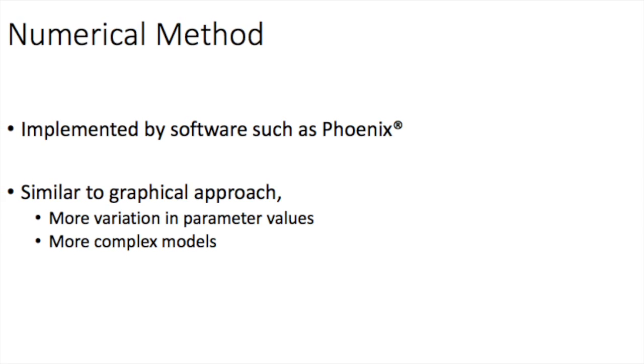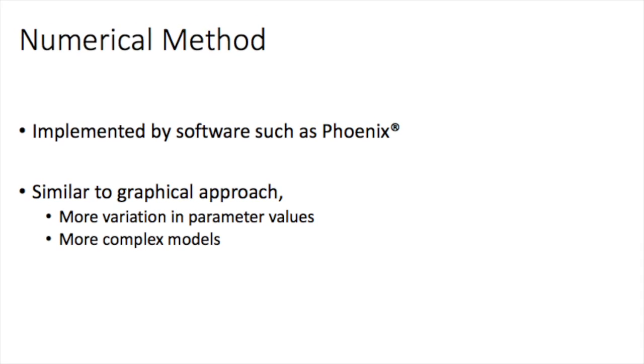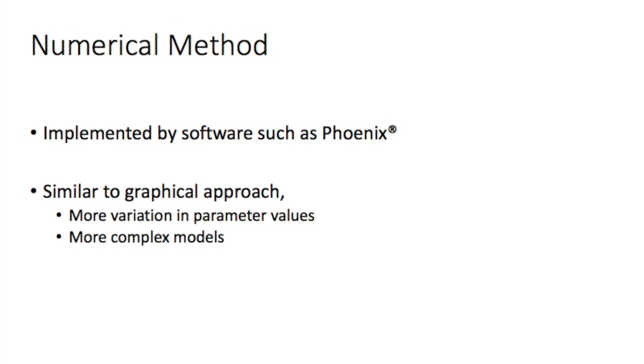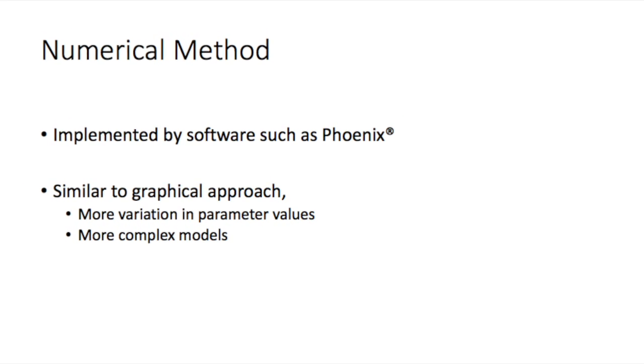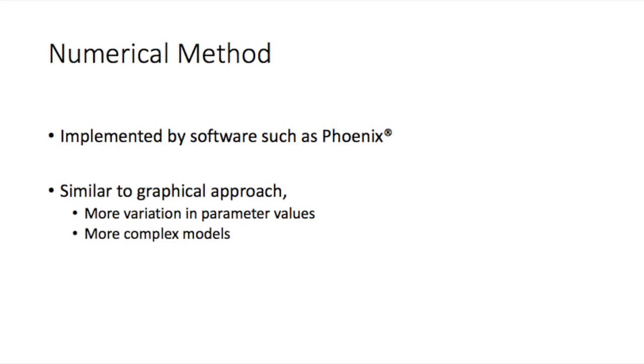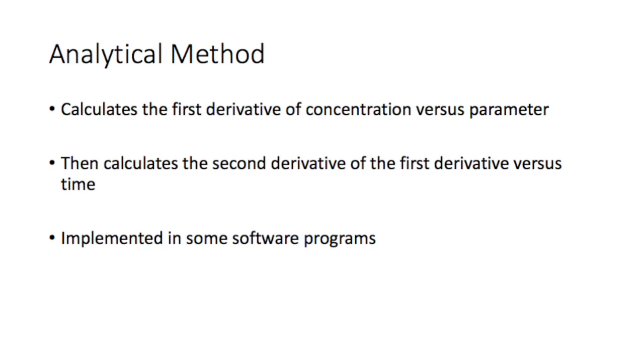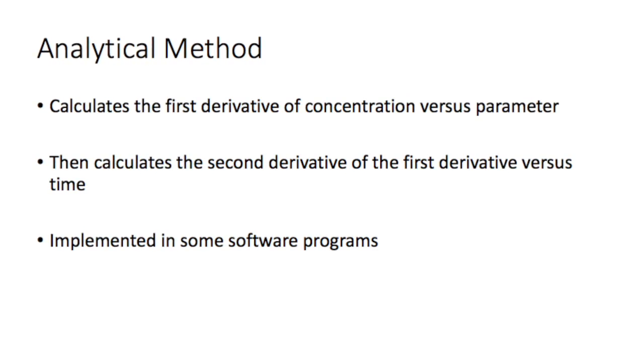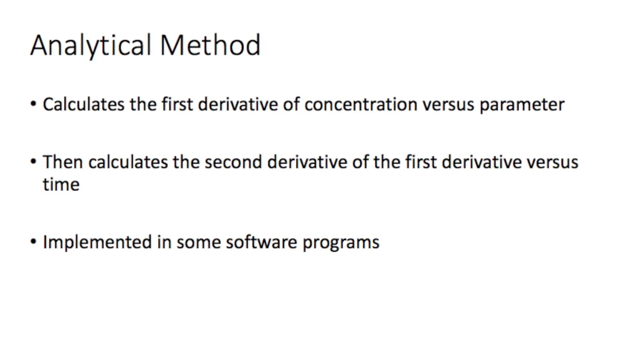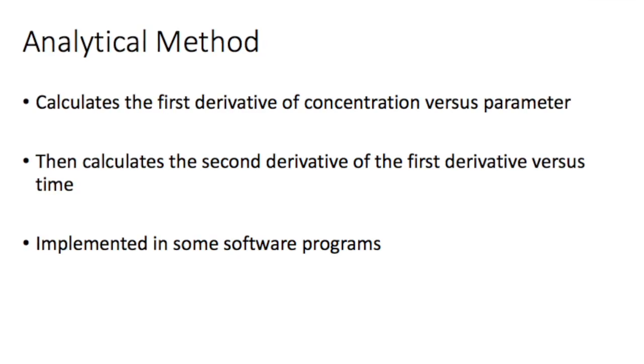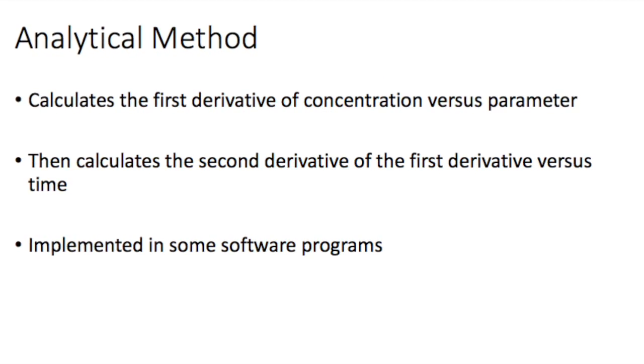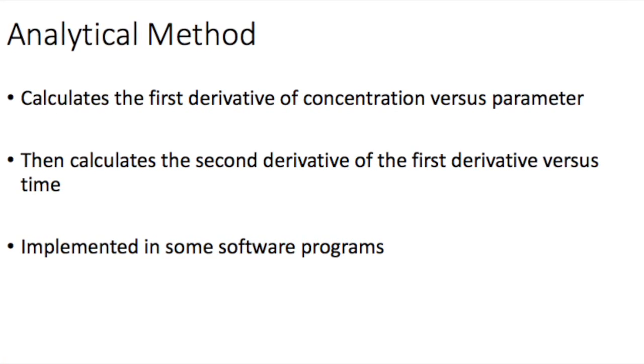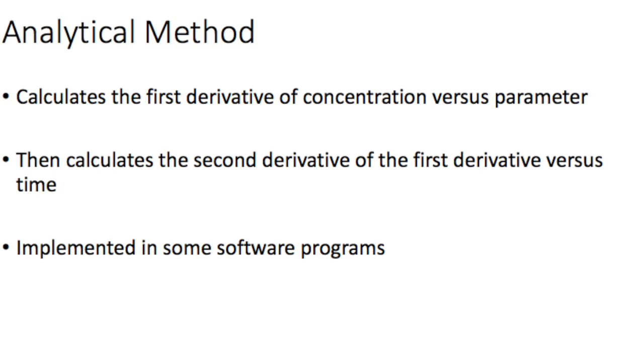The numerical method is similar to the graphical method except that it's done with computer software so that many more variations in parameter values and more complex models can be explored. And finally, the analytical method looks at the first derivative of the concentration versus parameter and then the second derivative of the first derivative versus time, which is beyond the scope of this course except that you must be aware that it is a method that is used by pharmacokinetic software as well.